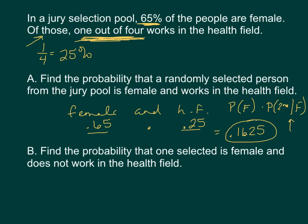Find the probability that one selected, someone selected is female, and does not work in the health field. So we have an and probability, which means I need two probabilities that I'm going to multiply together. It's female and not health field. I know the probability of getting a female, that's 0.65. I know when I am in an and situation, I multiply.